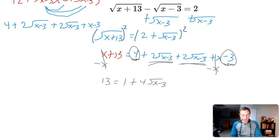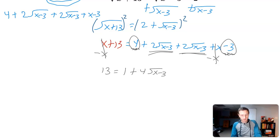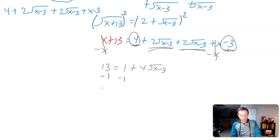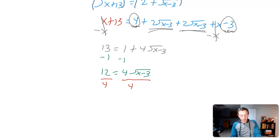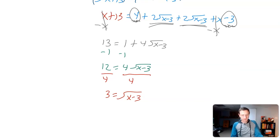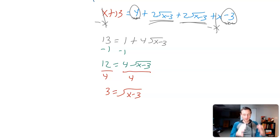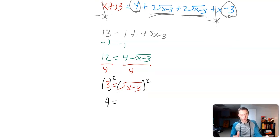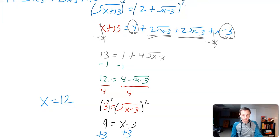Now it's looking like a problem we can solve. I'll subtract 1 from both sides: 13 minus 1 is 12, equals 4 square root of x minus 3. Then I divide by 4: 3 equals the square root of x minus 3. From all of that, we got it down to just 3 equals square root of x minus 3. Now I can square both sides — 3 squared is 9, equals x minus 3. Adding 3 to both sides gives us the solution x equals 12.